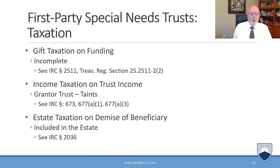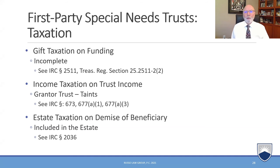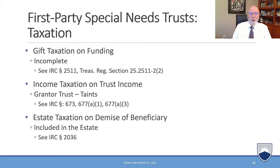For income tax purposes, a first-party SNT is going to be a grantor trust. The grantor is the beneficiary — really important to understand that even though a parent may have set up the trust, the IRS has a revenue ruling that says because the trust is funded with the assets of the beneficiary for the beneficiary's use, they're treated as the grantor. Code sections 673, 677(b)(1), and 677(b)(3) are all taints that could be put in. For estate tax purposes, it will be included in the estate of the beneficiary who is also treated as the grantor for tax purposes.